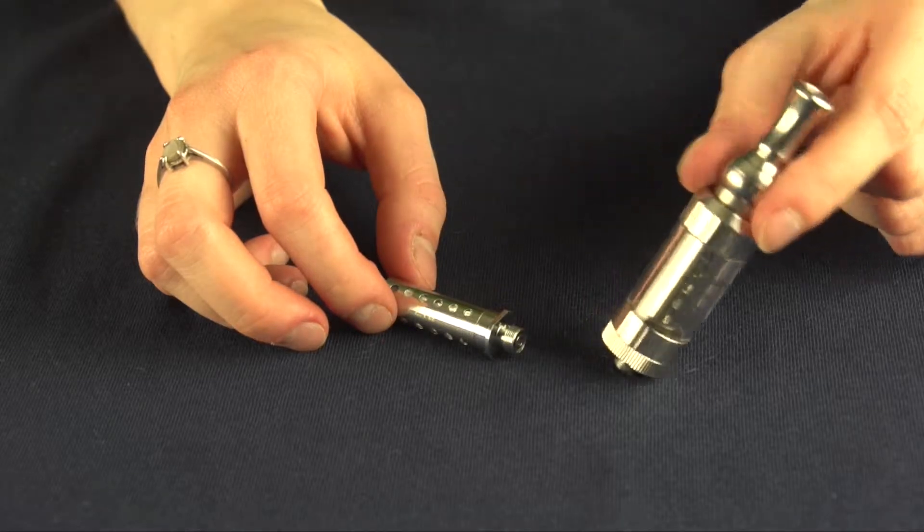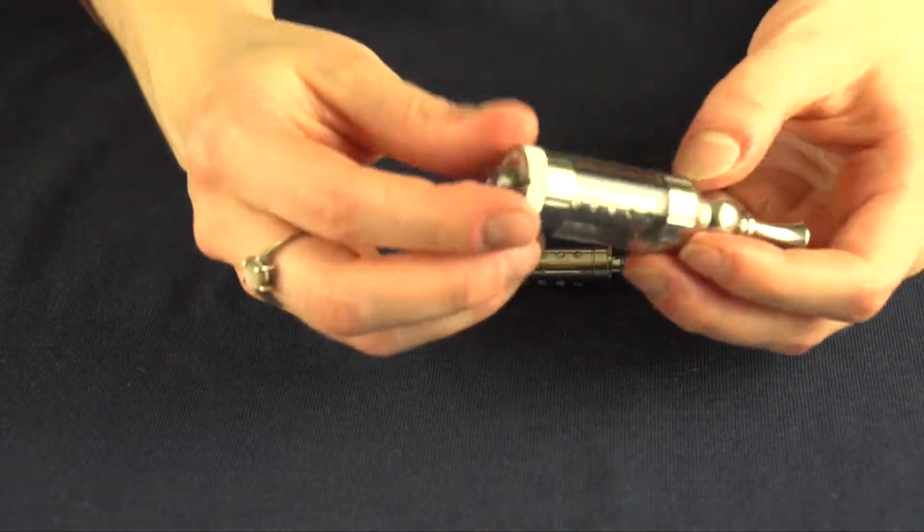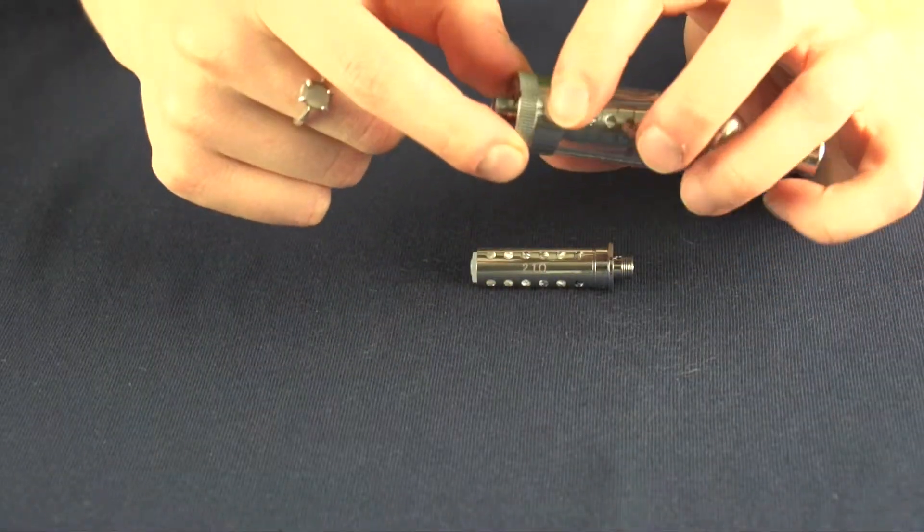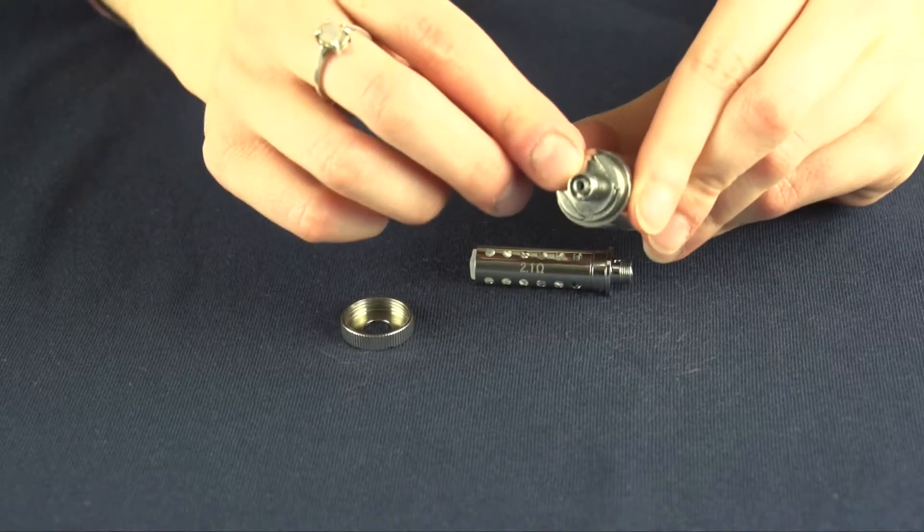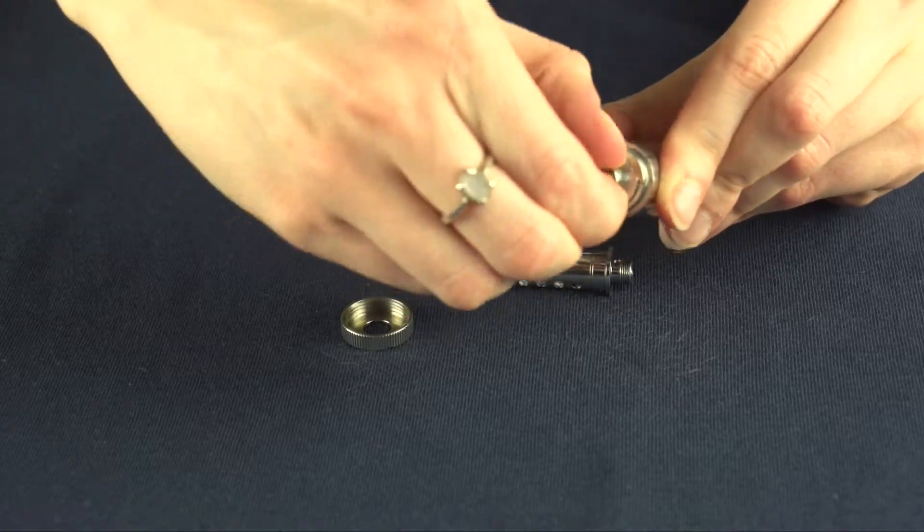To replace the old coil in your iClear 30S, unscrew from the very bottom right down here, and then the replacement coil will pull right out.